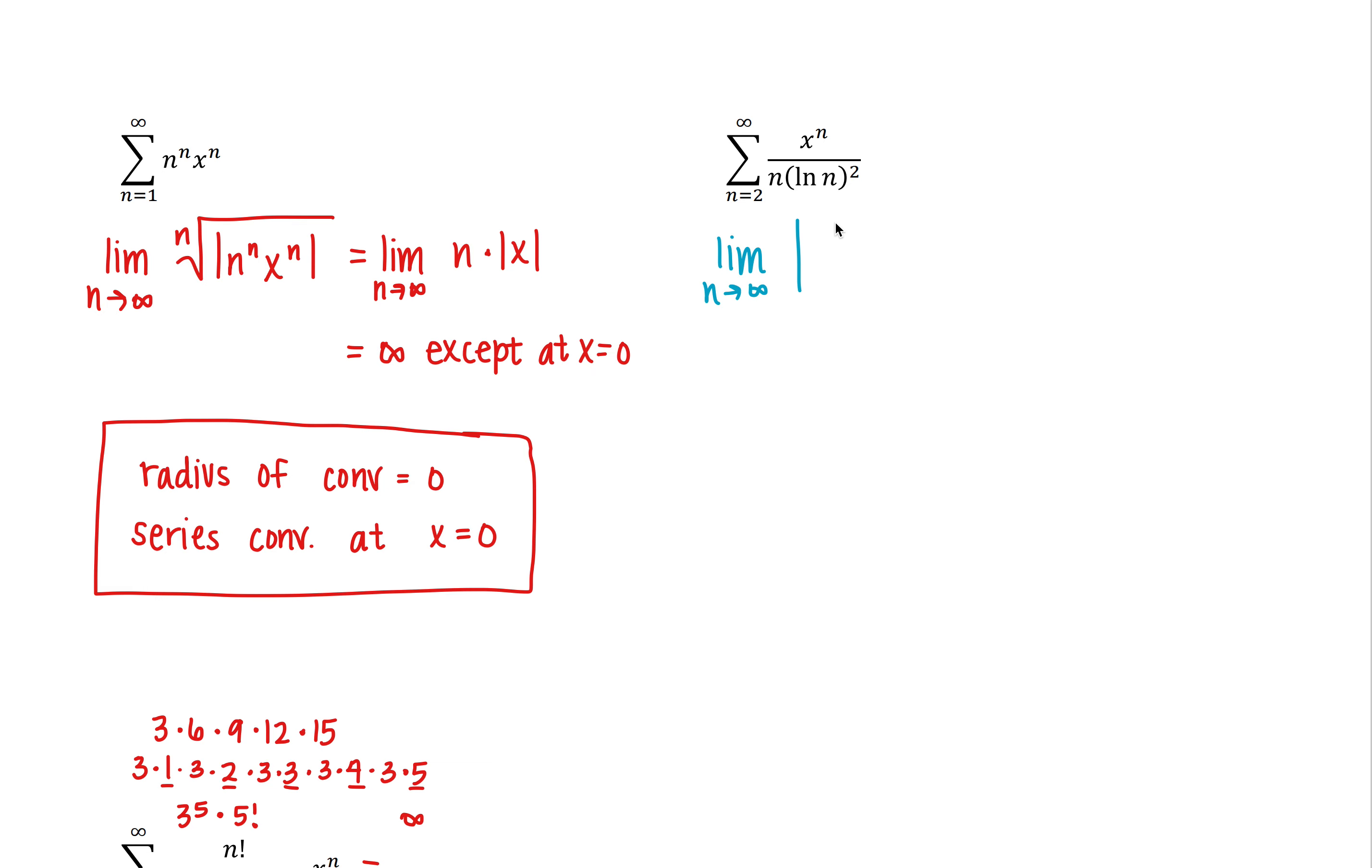So the n plus first term is x to the n plus 1 over n plus 1 times the natural log of n plus 1 quantity squared.